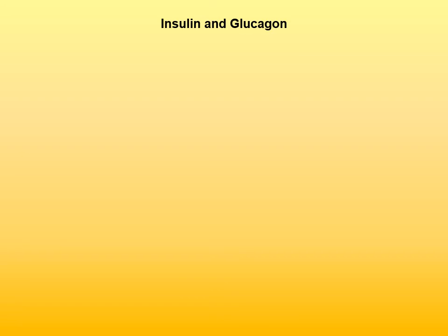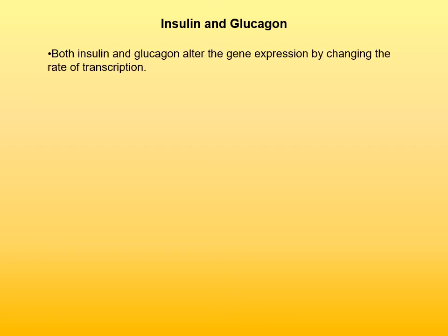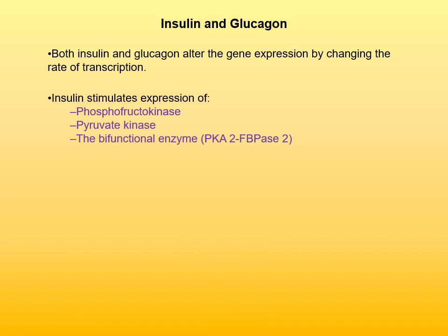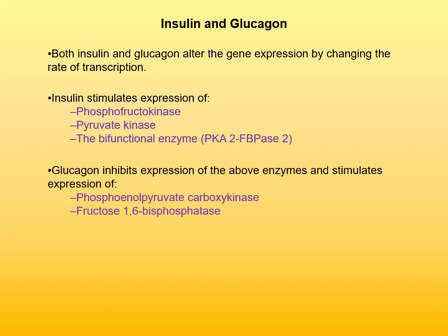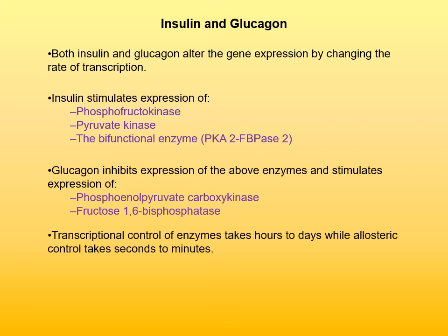Insulin and glucagon are two hormones that regulate blood glucose levels. Both alter gene expression by changing the rate of transcription or the rate of synthesis of proteins. Insulin stimulates expression of phosphofructokinase, pyruvate kinase, and the bifunctional enzyme PFK2-FBPase-2 — so insulin stimulates expression of enzymes involved in glycolysis. Glucagon inhibits expression of those enzymes and stimulates expression of phosphoenolpyruvate carboxylase and fructose-1,6-bisphosphatase — so glucagon inhibits glycolysis enzymes and stimulates gluconeogenesis enzymes. Transcriptional control of enzymes takes hours to days, while allosteric control takes seconds to minutes.